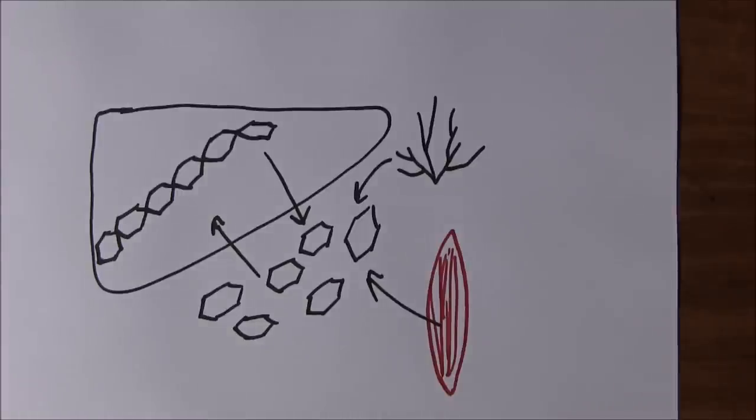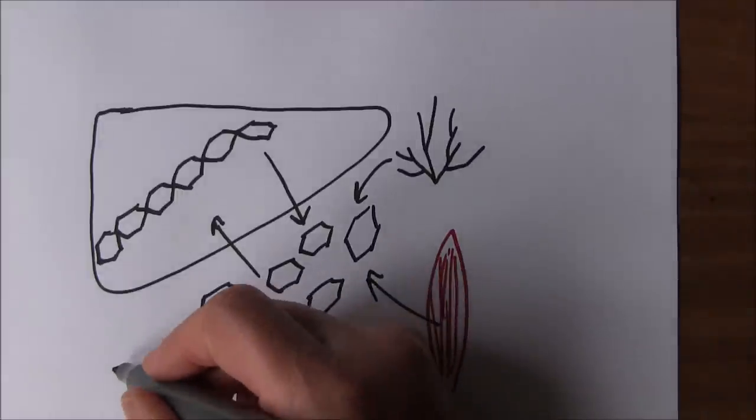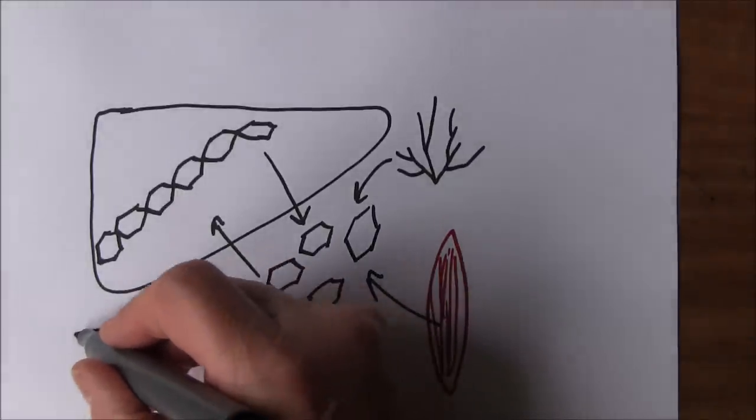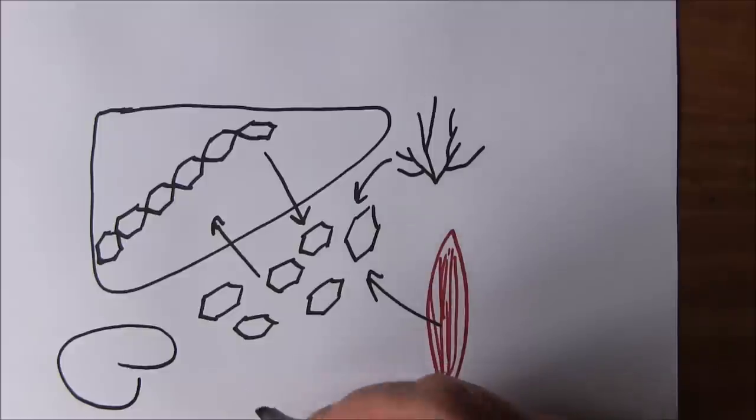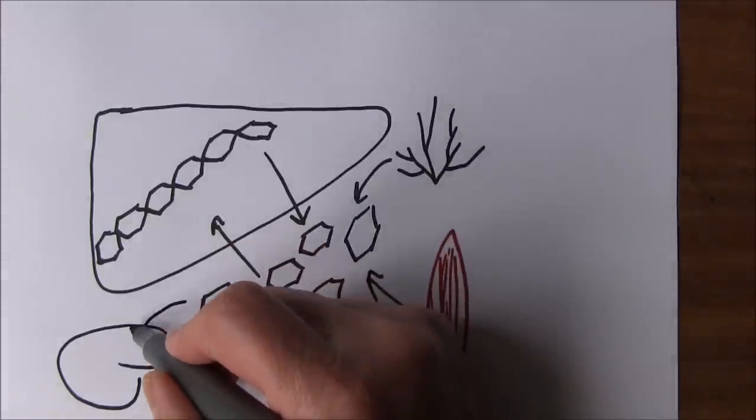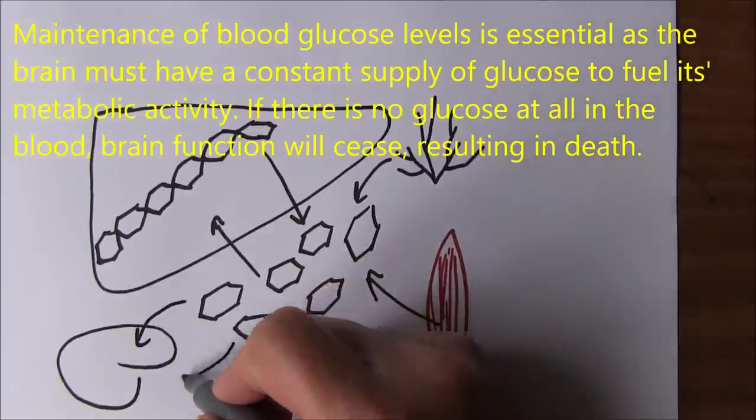This is absolutely vital because the brain, for example, is what we call an obligate glucose user. It must have glucose in order to function.